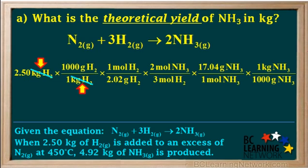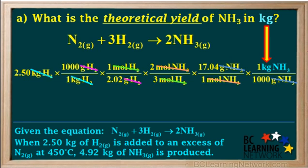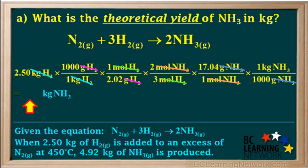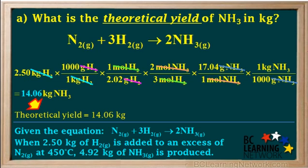We cancel out the kilograms of H₂, the grams of H₂, the moles of H₂, the moles of NH₃, and the grams of NH₃. We're left with kilograms of NH₃, which is the unit we wanted. So we'll write that as the unit for our answer. Then we go 2.5 times 1000, divided by 2.02, times 2, divided by 3, times 17.04, divided by 1000, which gives us 14.06 kilograms. Now if this was rounded to three significant figures it would be 14.1 kilograms. However, we're going to use this in a subsequent calculation, so we'll leave it expressed to one extra significant figure. We'll make a note of the theoretical yield.